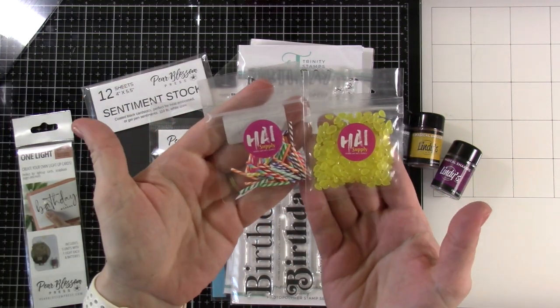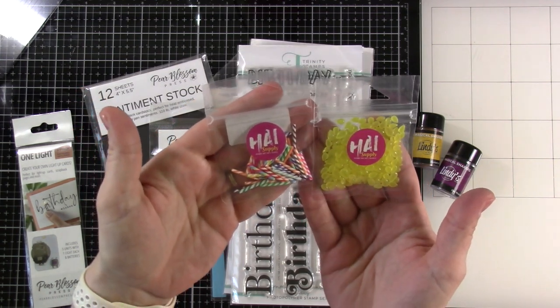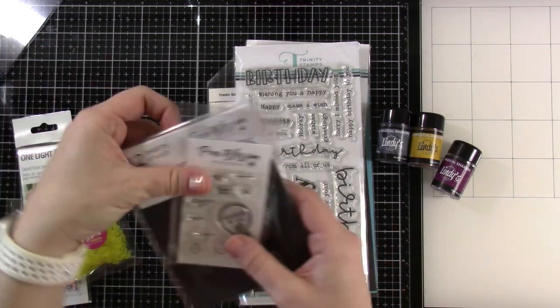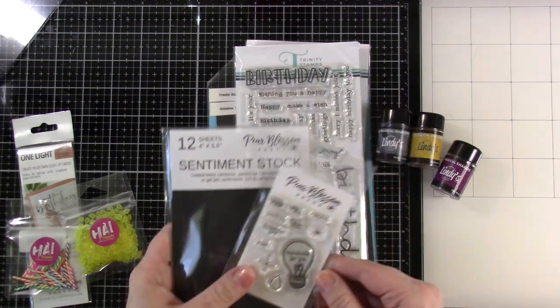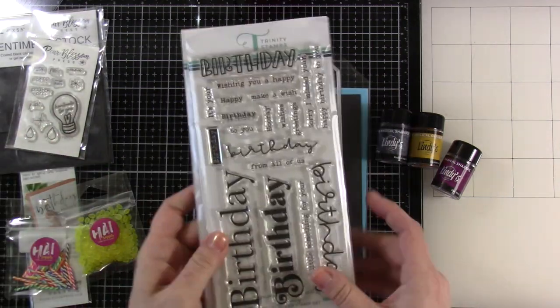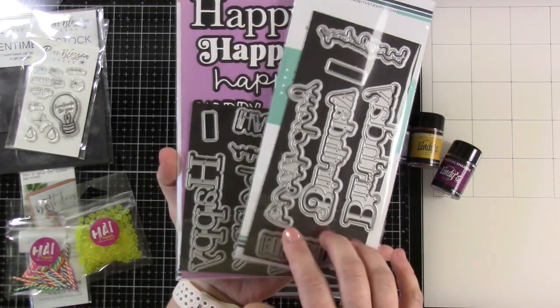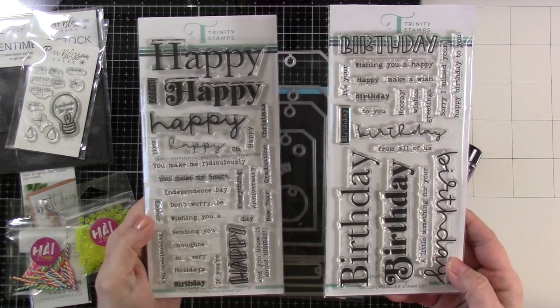We've got our HAI supply clay candlesticks and candle flames—perfect for our birthday card. We're also using some black sentiment stock. I love this stuff for sentiments. We have the Pear Blossom Press stamp set and a couple of stamp sets from Trinity Stamps: Simply Sentimental Happy and Birthday. We're going to use the dies and grab a couple little sentiments out of each.